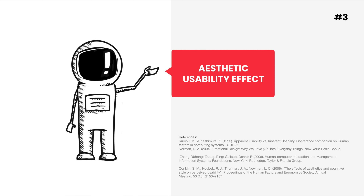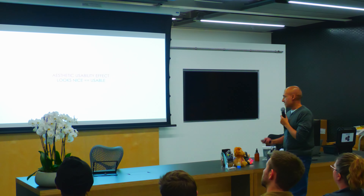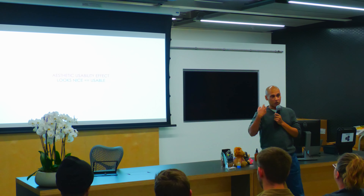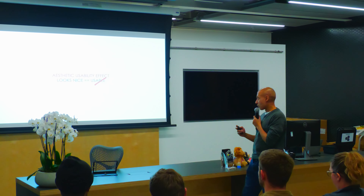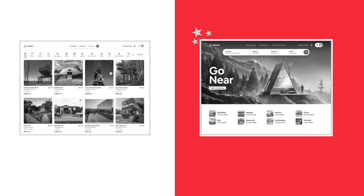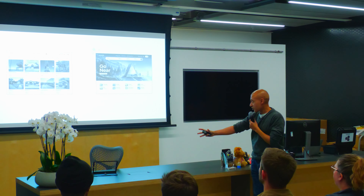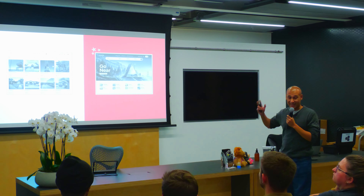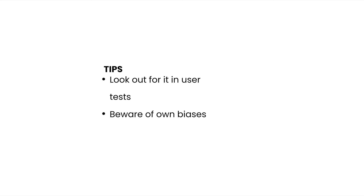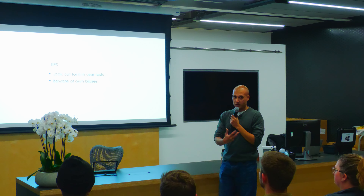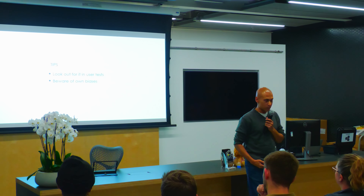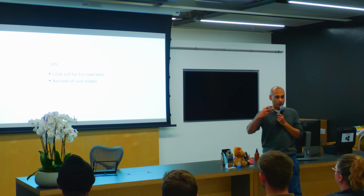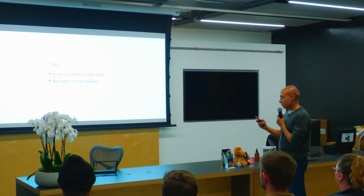The aesthetic usability effect is something that happens during user tests. People often conflate what looks nice with what is actually usable, even though that may not be the case. If users have an option between a design that's really functional and something that looks nice, they'll be drawn to the thing that looks nice and say it's actually really usable. This is something I see a lot, especially when user test recordings go out to the entire company — that causes a problem. So basically, don't trust what people say, trust what people do, and beware of your own biases.